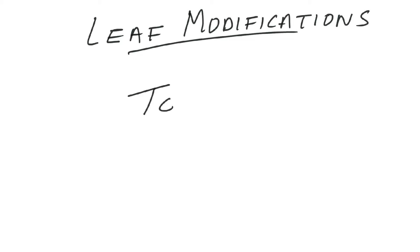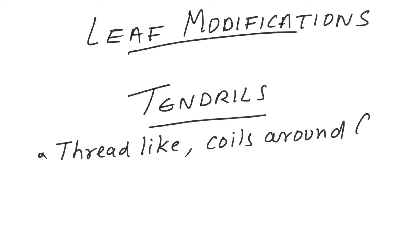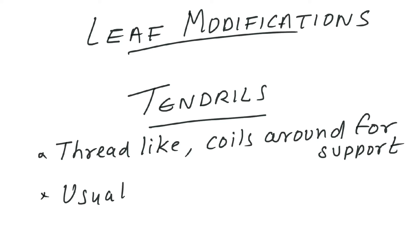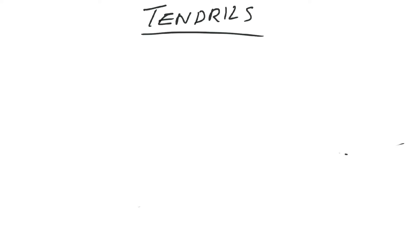Welcome students to a new video dealing with leaf modifications, one of the most important sections as far as plant morphology is concerned, and also from the examination point of view. We are beginning with tendrils. Tendrils are thread-like coiling structures specifically meant for support. For plants which have a weak stem, tendrils provide a means to support the growing stem. Usually tendrils are unbranched and they don't have any scales.